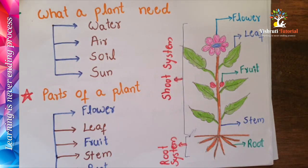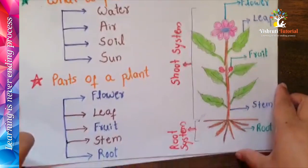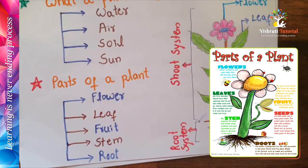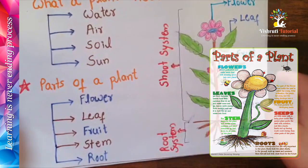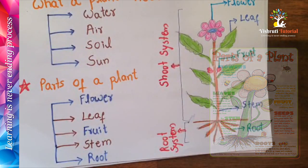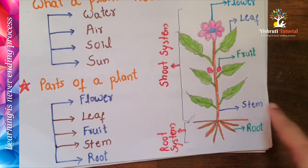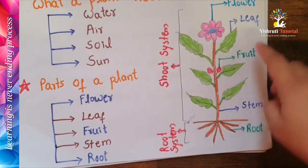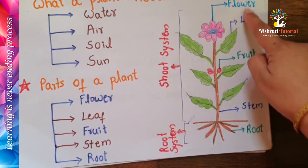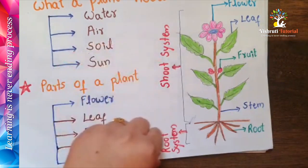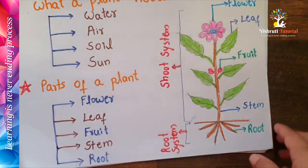Next, what are the parts of a plant? The parts of a plant are: flower, leaf, fruit, stem, and root. Look at this picture — here you can see the root, stem, fruit, leaf, and flower. The upper part is called the shoot system and the lower part is called the root system.